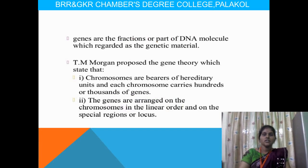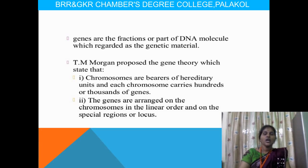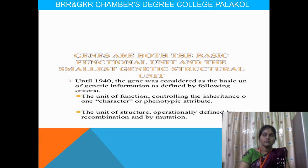T.H. Morgan proposed the gene theory, which states that chromosomes are bearers of hereditary units and each chromosome carries hundreds and thousands of genes. These genes can express different types of characters and also suppress some characters. During suppression and expression, it will give some benefits and harmful effects to human beings, and sometimes it will give some disorders. Genes are arranged in chromosomes in a linear order on a special region called the locus.